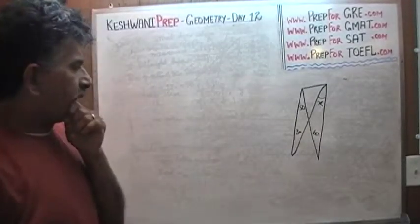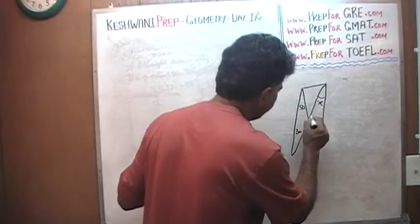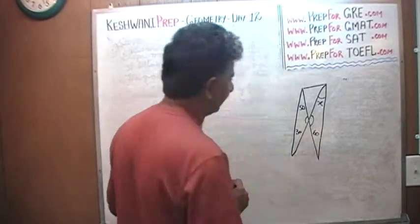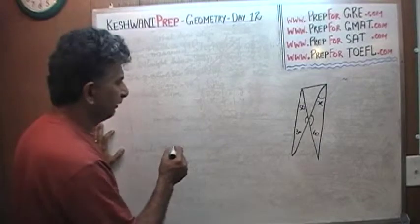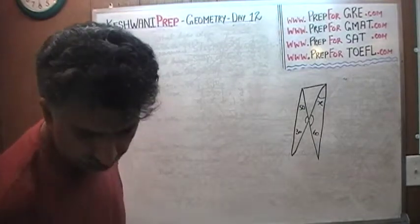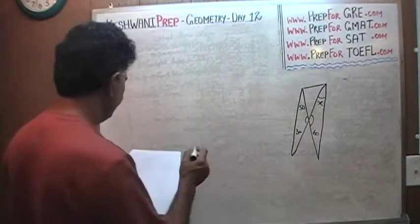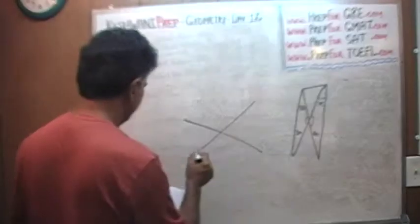Alright. How do we go about it? We do not know these angles. We do not know this angle and that angle. Let me redraw this picture here a little bit better because I drew it too small and too in a crowded way.